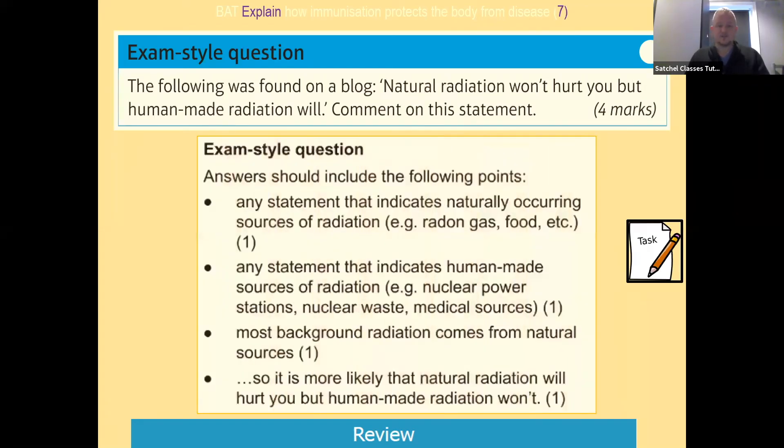But actually, in this kind of question, the first thing that we do is indicate naturally occurring sources of radiation—radiation from radon gas, food, from rocks in the soil, from buildings—and then the fact that human-made radiation sources, nuclear power stations, nuclear waste, medical sources, they're less common. Most of the background radiation comes from natural sources because it's around us all the time.